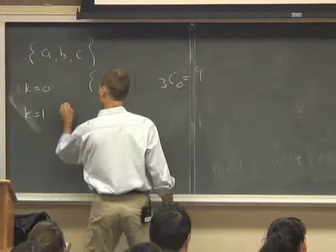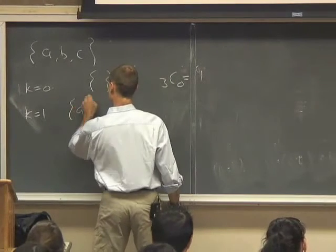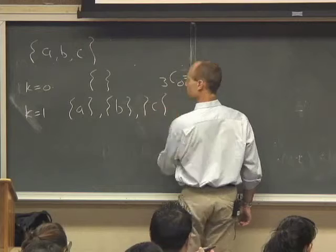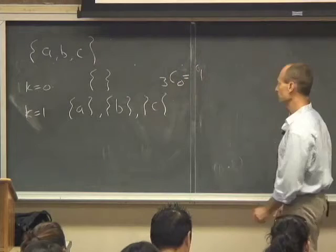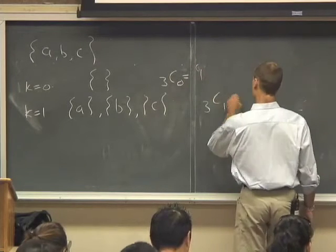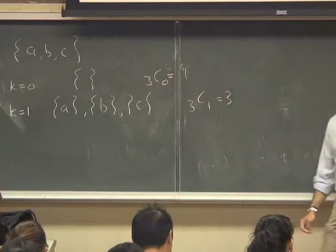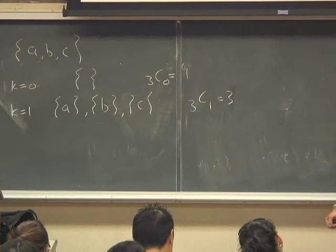For k equals 1, we have three possibilities: we have the subset {a}, the subset {b}, and the subset {c}. That's 3 choose 1, which is 3.